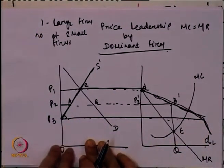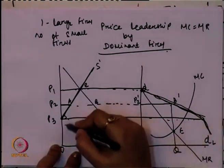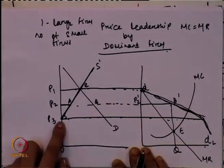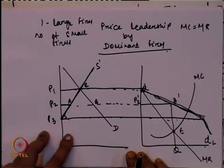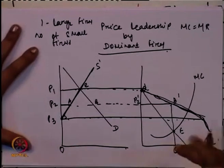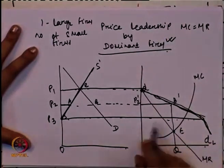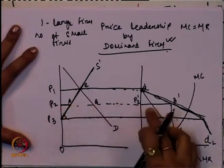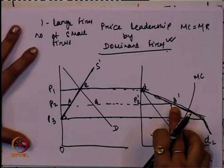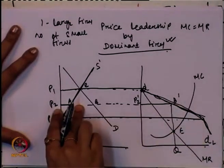If the price is P3, the supply given by small firms is zero — the entire demand must be met by the large firm because small firms are not supplying anything at price P3. Any price below P3, small firms' supply curve does not exist. So when the price is given by the dominant firm, the amount supplied by small firms is less and the amount supplied by the large firm is more.